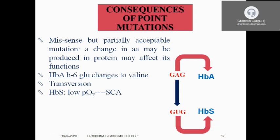Missense but partially acceptable mutation — an example is sickle cell disease. In adult hemoglobin, in the beta chain at the sixth position, glutamic acid is coded by GAG. This GAG codon is replaced by GUG — purine replaced by pyrimidine, a transversion. GUG codes for valine. The polar glutamic acid, which is an acidic amino acid, is replaced by valine, a branched-chain non-polar amino acid. This accounts for the stickiness of the hemoglobin molecule, resulting in hemoglobin S, causing sickle cell disease.